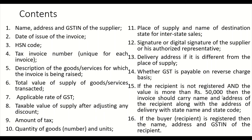Additionally, the delivery or shipping address is required if different from the billing address. Whether GST is payable on reverse charge basis must be stated. If the recipient is unregistered and the value exceeds 50,000 rupees, the invoice must carry the recipient's name, address, state name and state code.